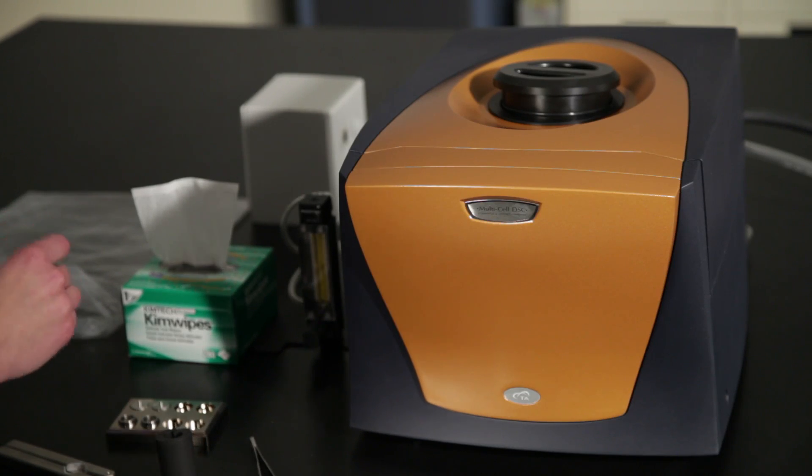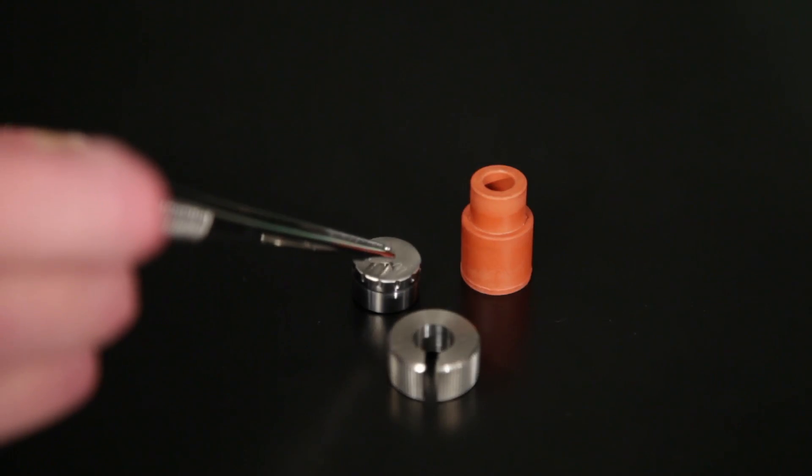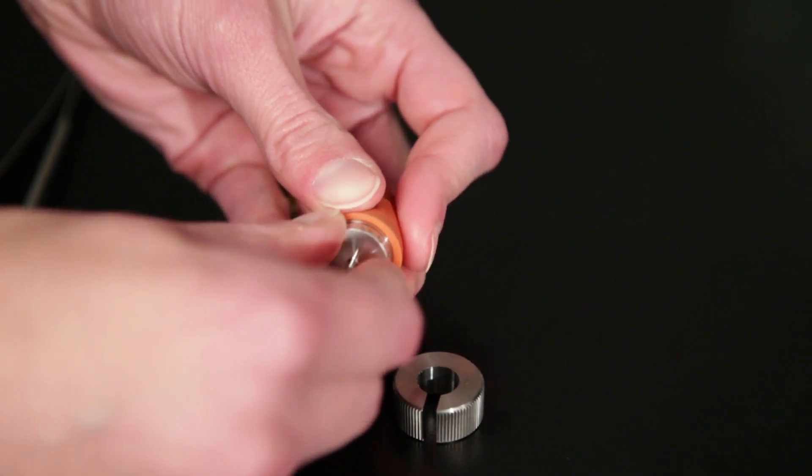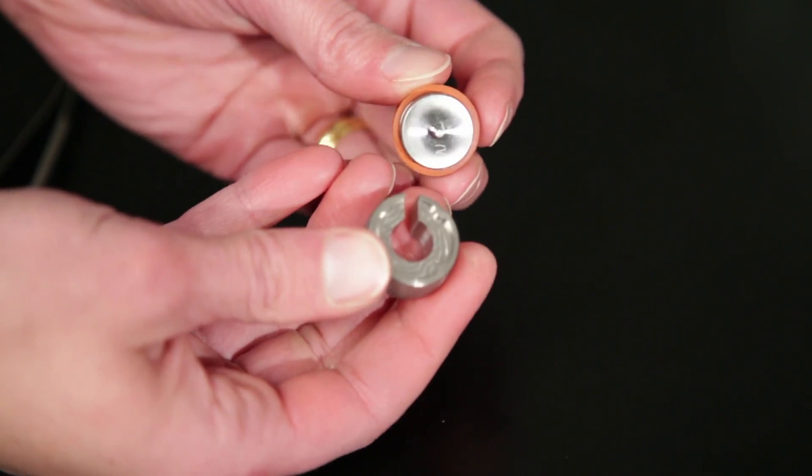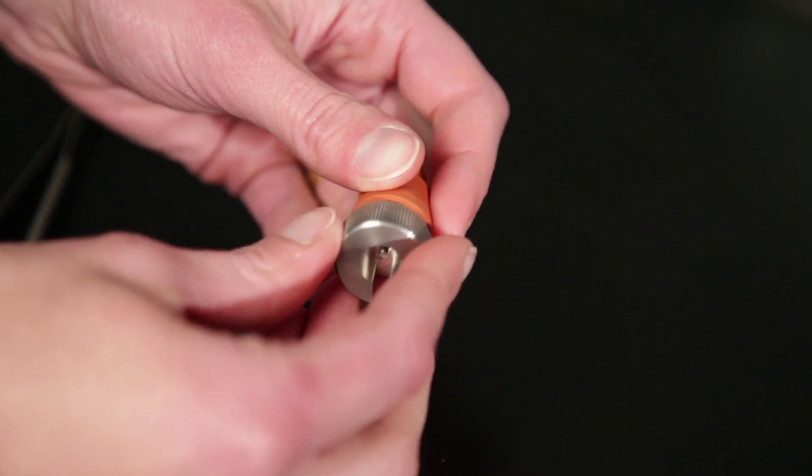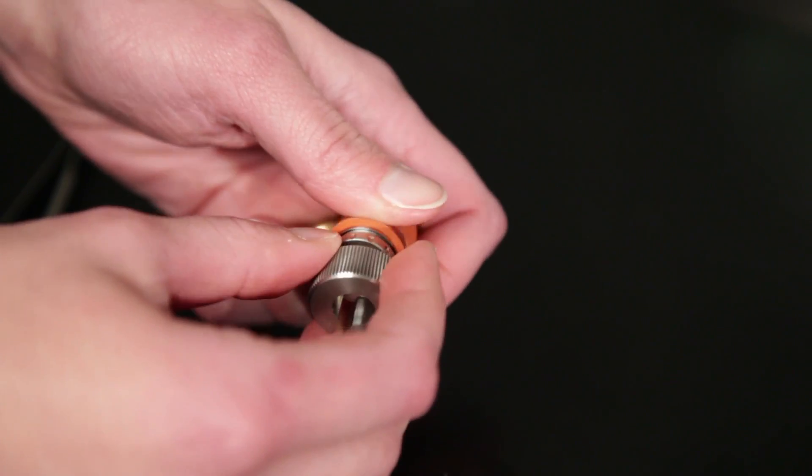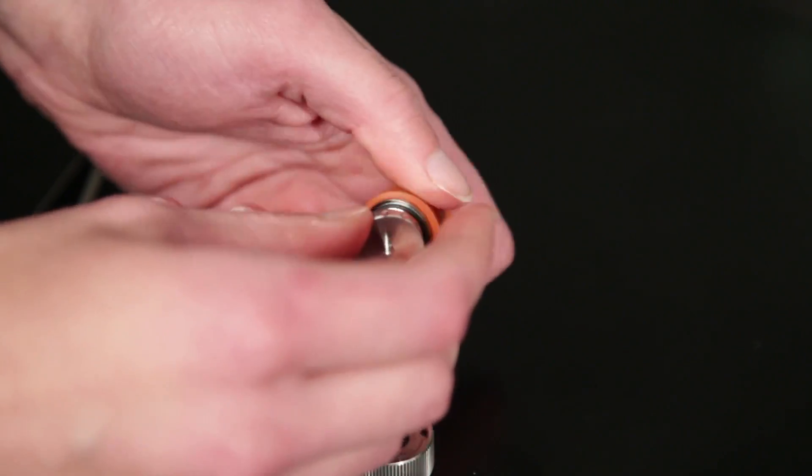At this point we can use the opening tools - the little metal piece and the rubber stopper. The bottom fits into the rubber stopper, and there are notches on this upper opening piece that fit onto the lid. You turn and then open up the ampoule.